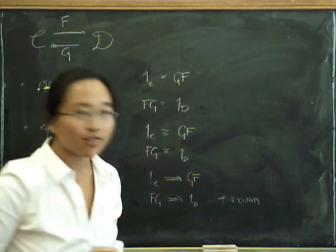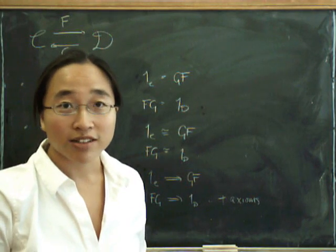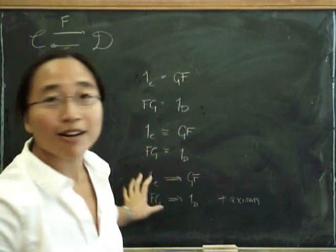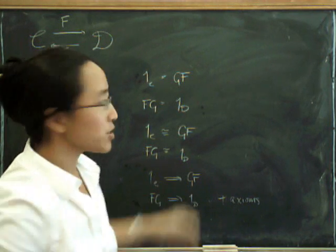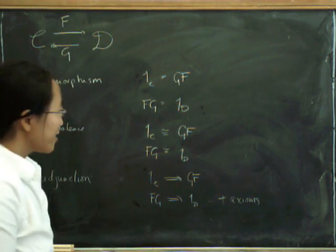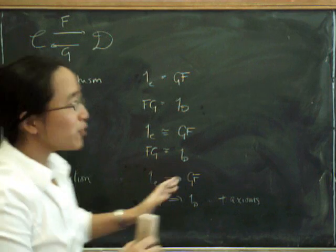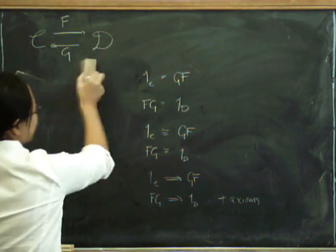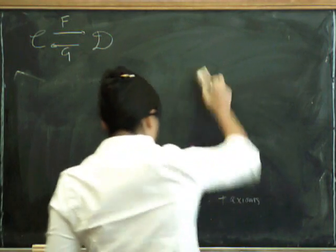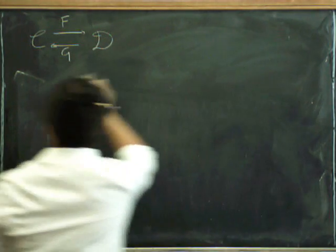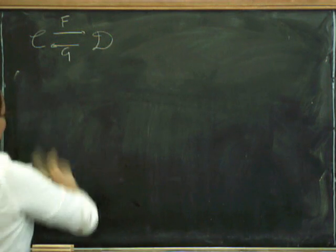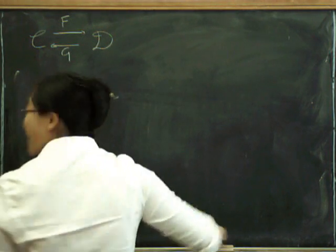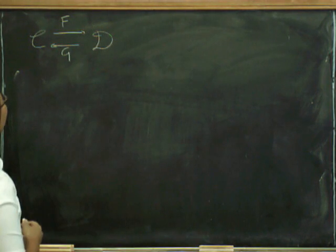You can now test yourself to see how much of a hardened category theorist you are by seeing if you can work out all by yourself what the obvious axioms are here. Try that now. Okay, if you haven't been able to do it yet, I will now tell you what they are.